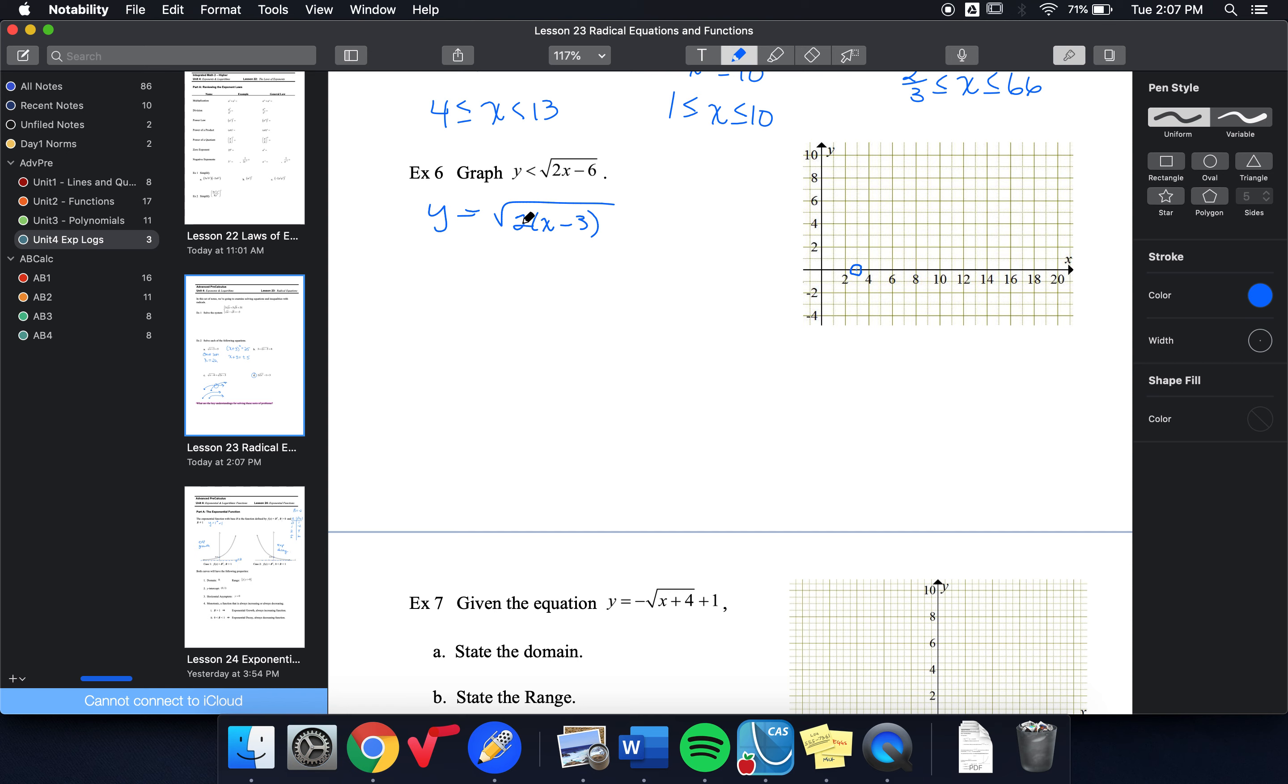And the point 3, 0 is on this graph, but I really want to graph my inequality. The next point I'm going to think about is on my parent function, I would go 0, 0, 1, 1, 4, 2. So I'm going to think about the 4, 2, because I said I wanted to divide my x values by 2.